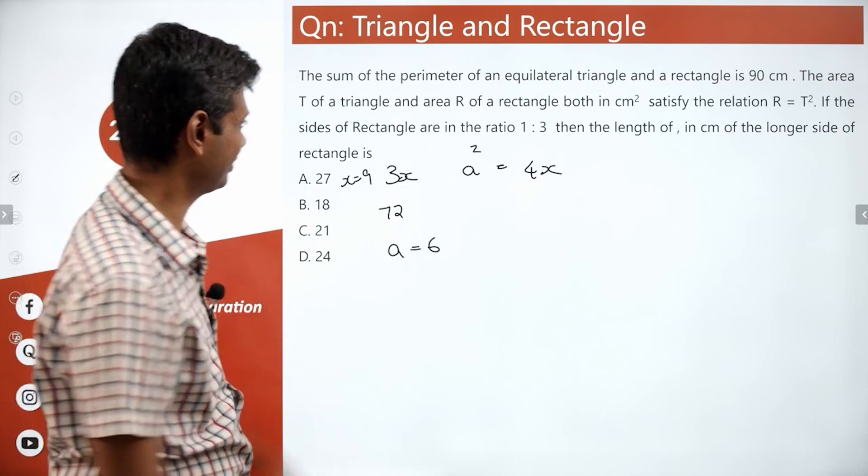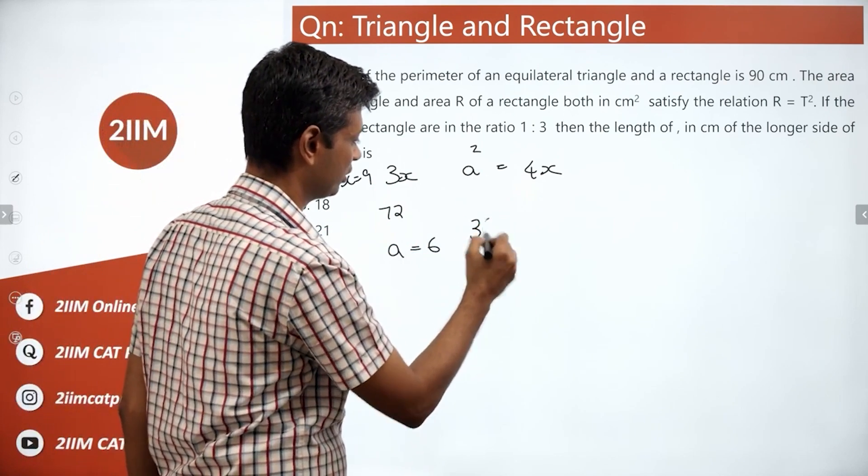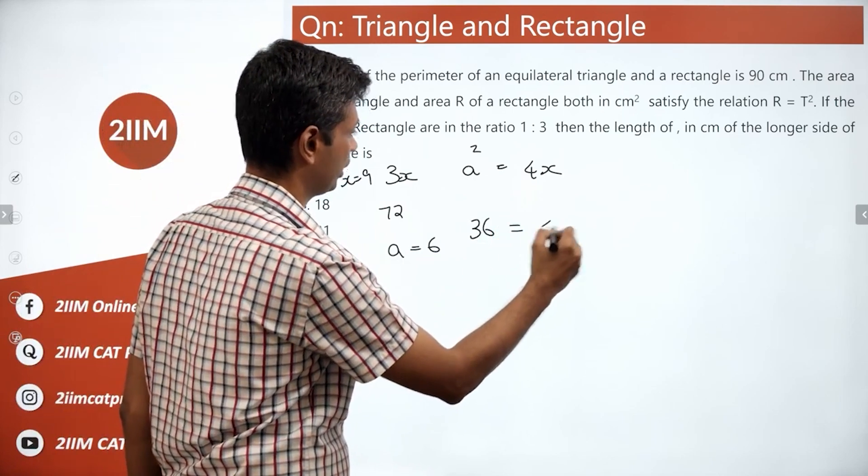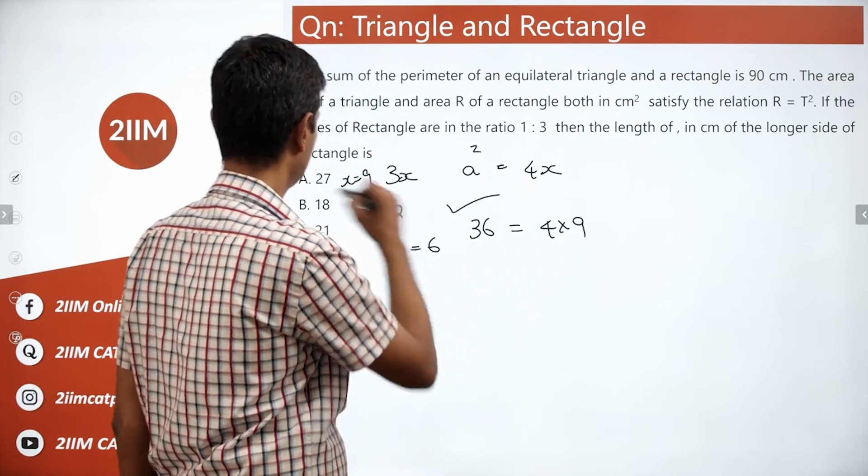So, x is 9, A is 6. A square is 36. 4 into 9 is 36. This works, this works.